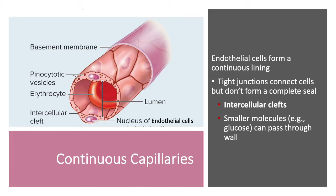First up, we have the continuous capillaries — the most common type. As their name alludes, they form a continuous endothelial lining with no fenestrations or gaps. There are tight junctions between these simple squamous epithelium cells, but small gaps called intercellular clefts exist between the cells. These clefts allow smaller molecules like glucose to pass through the wall, but larger particles like cells or proteins cannot pass through.